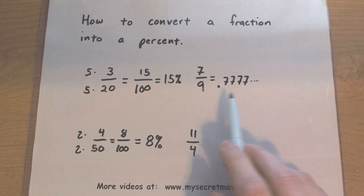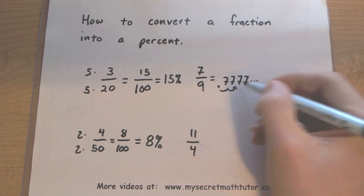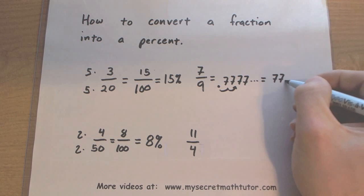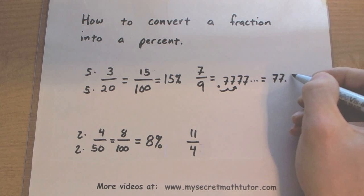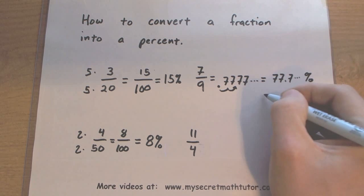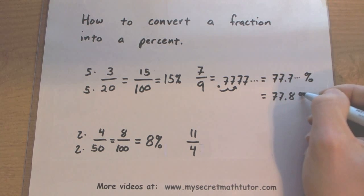Then what I do is I take the decimal and I change that into a percent. Remember, when you want to change a decimal into a percent, you basically take this decimal point, you move it over two spots, and you have your percentage. Since this one does keep going on forever, I'm probably just going to round this to 77.8%.